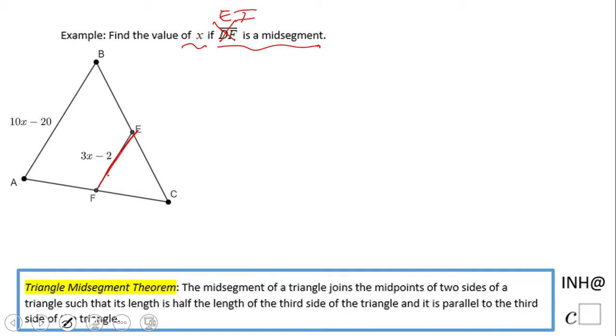So this is a midsegment because E is a midpoint and F is a midpoint. That's a thing that you may need some time to remember. A midsegment is the segment that connects the two midpoints of two sides of the triangle.